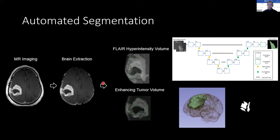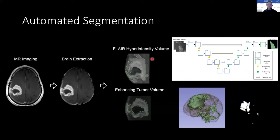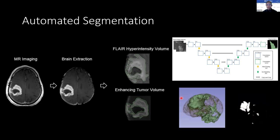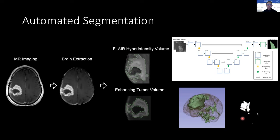To do the segmentation of the tumors, we do two steps. First, we segment the hyperintensity in FLAIR imaging, and then this ROI is used to bound the region on which the enhancing tumor can be segmented. Here you can see a time-lapse of the network outputs while the network is training, and you can clearly see that as training goes on, the network gets more accurate and more refined in its segmentation of the tumor region.